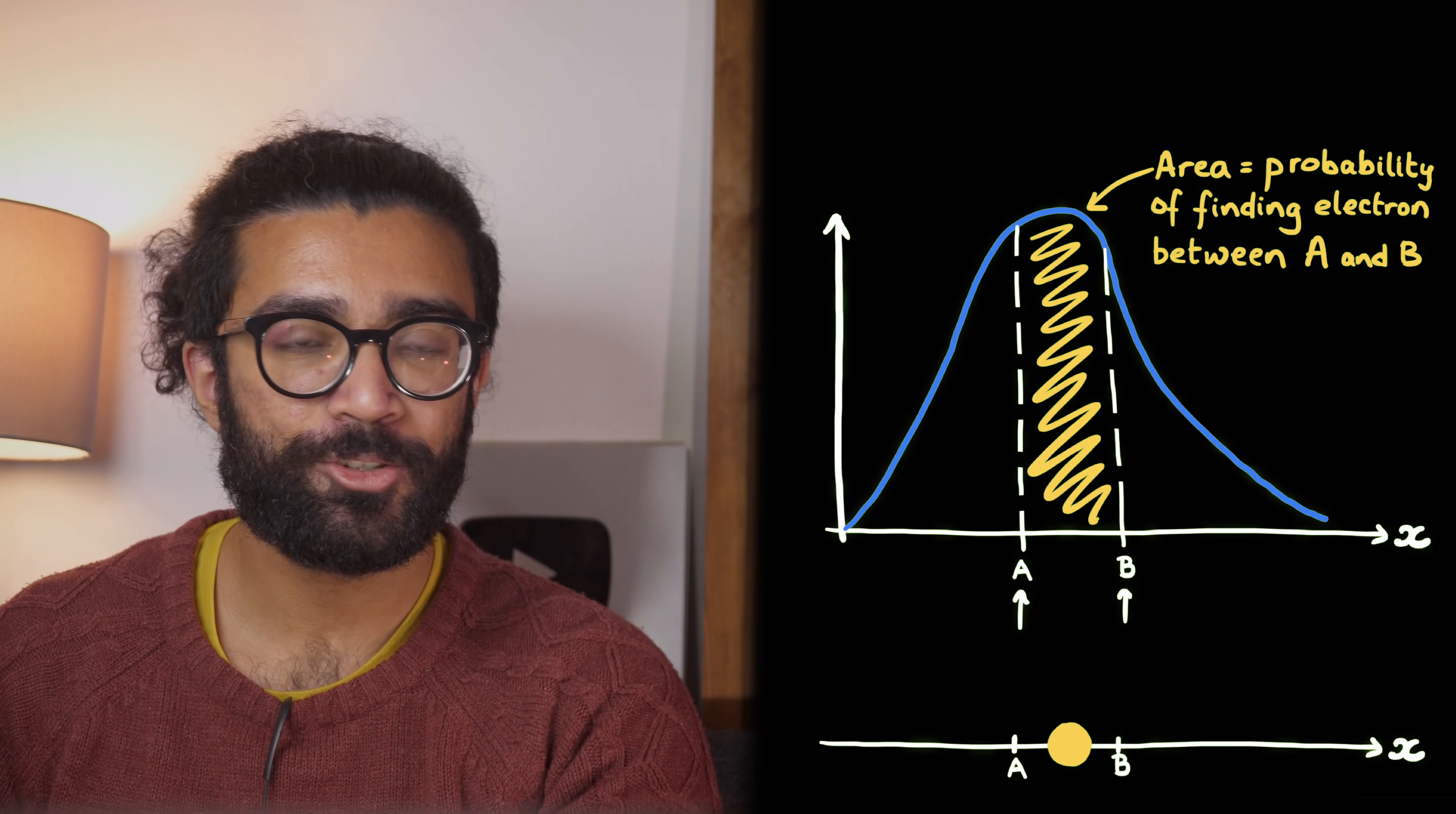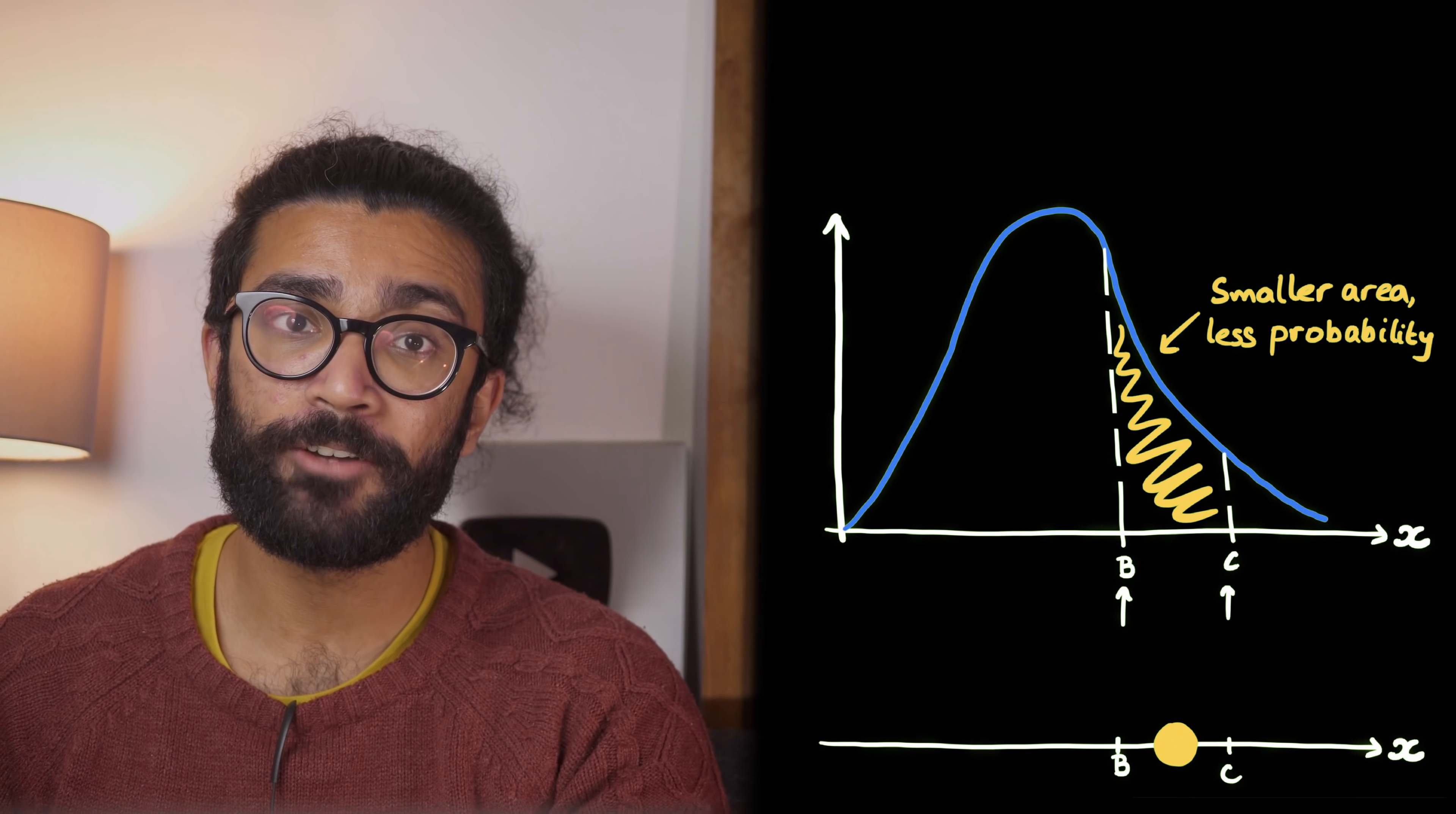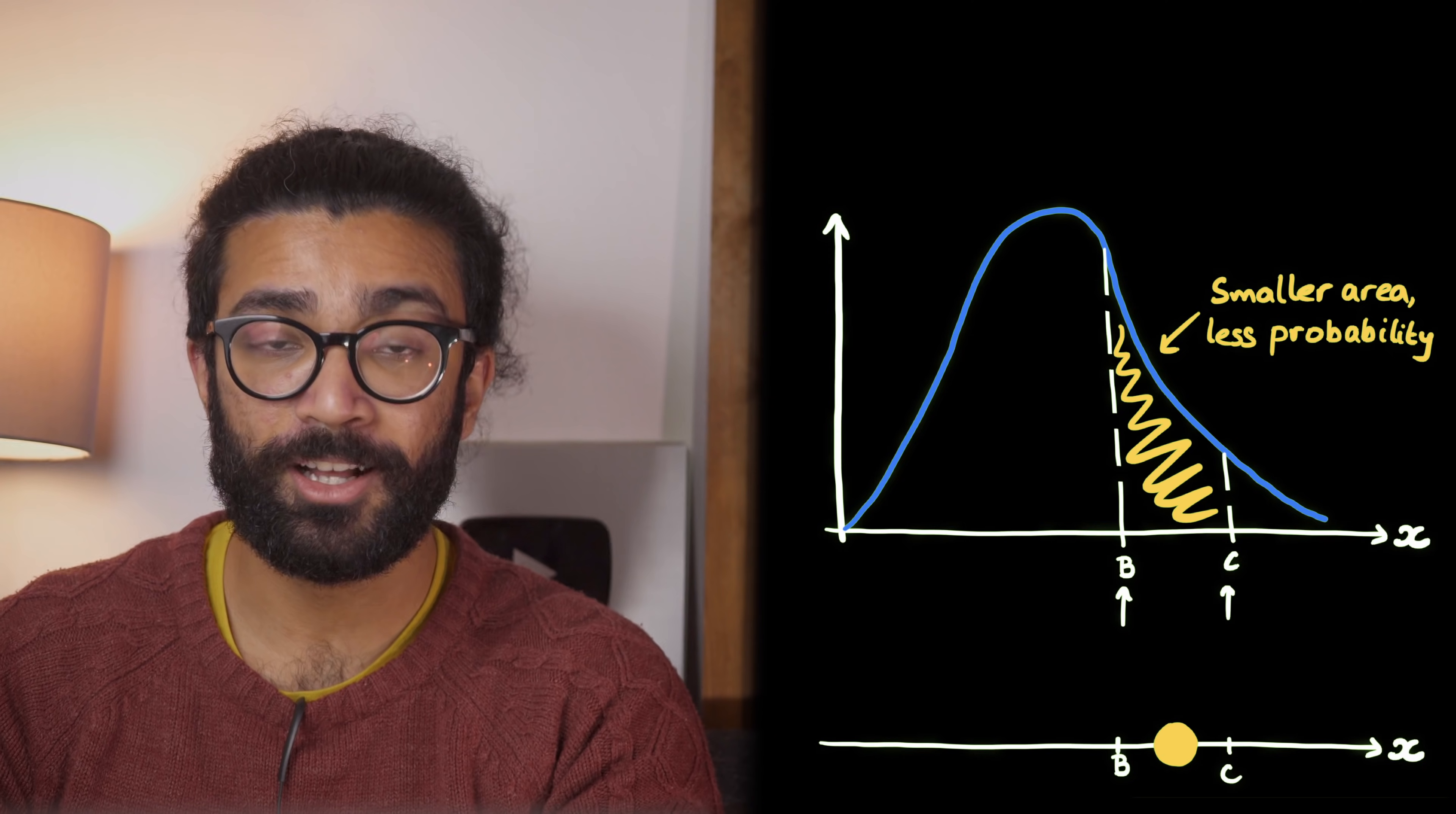So, for example, between these two points, the area under the curve is big. So we're really likely to find the electron here. But for these two points, the area under the wave function squared curve is small. So it's really unlikely that we'll find it here. This is how a wave function corresponds to the system itself.